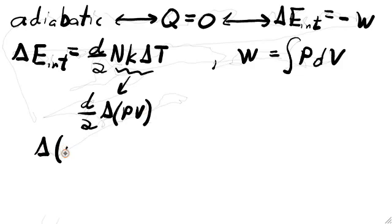In this case, moving the D over 2 to the other side of the equation, we find delta of quantity PV equals minus 2 over D times the integral of PDV.